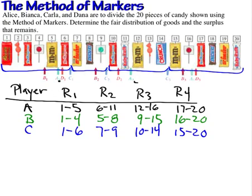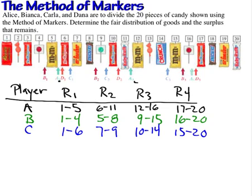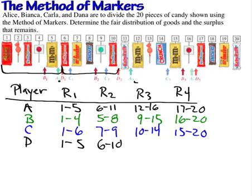Now we do this for our fourth player, Dana. Dana's first fair share is items 1 through 5. Player D's second fair share is 6 through 10. The third fair share includes items 11 through 16. And the fourth fair share is items 17 through 20. This completes the setup.